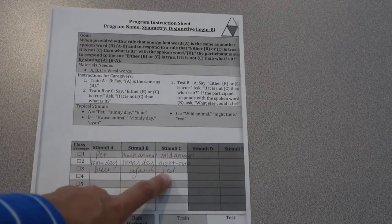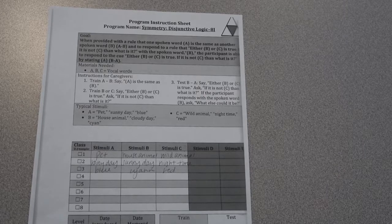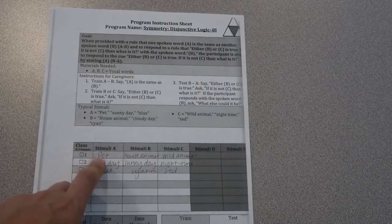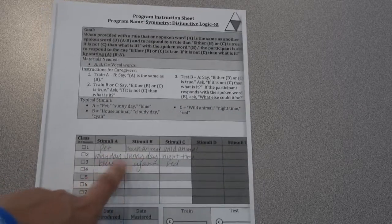I would go look at this demo. I think it's a lot easier seeing this one kind of in person. But basically you're going to do three blocks. First, you're going to train them to know that pet is the same as house animal, rainy day is the same as sunny day, blue is the same as cyan. One block of ten.